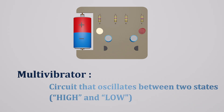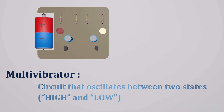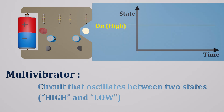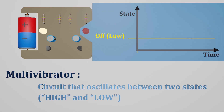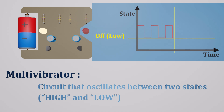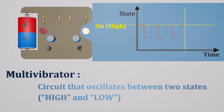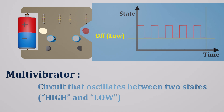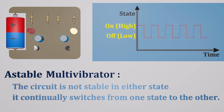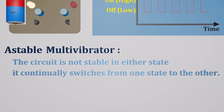A multivibrator is an electronic circuit used to implement a variety of simple two states. Looking at one LED, it oscillates between the high state and the low state, producing a continuous output. An astable multivibrator is one in which the circuit is not stable in either state — it continually switches from one state to the other.